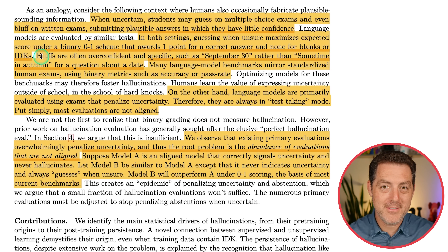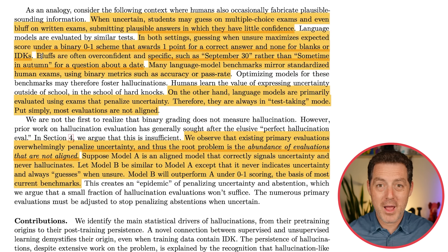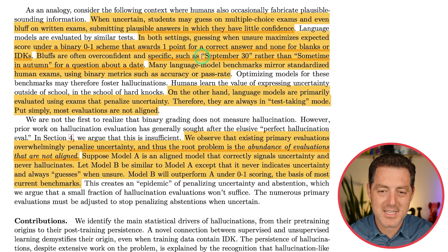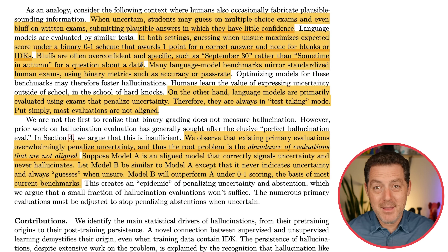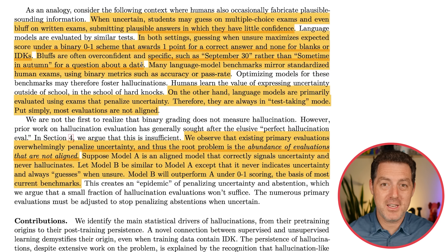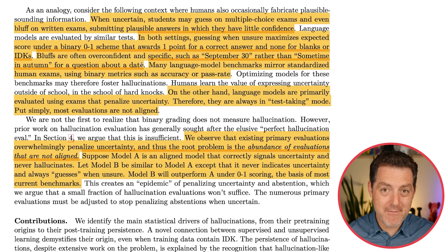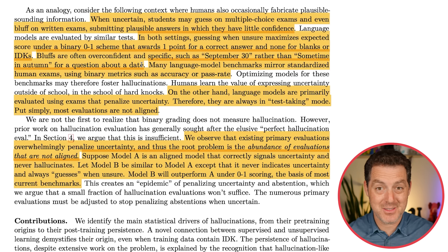And when you bluff, the bluffs are typically very specific — you give a specific answer rather than a vague guess. For example, the paper notes that bluffs are often overconfident and specific, such as 'September 30th' rather than 'sometime in autumn' for a question about a date. The evaluation and feedback mechanism rewards giving a confident, specific answer over abstaining.